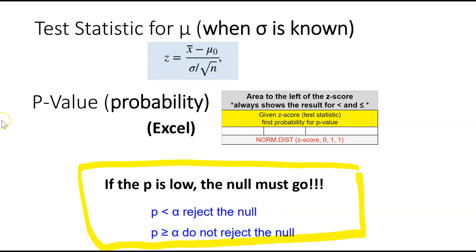So this is how we're going to calculate it. To determine the test statistic, we are going to use this formula here when sigma is known — the test statistic for mu when sigma is known. And to calculate the p-value, we're going to use the Excel NORM.DIST. Remember: if the p is low, the null must go.